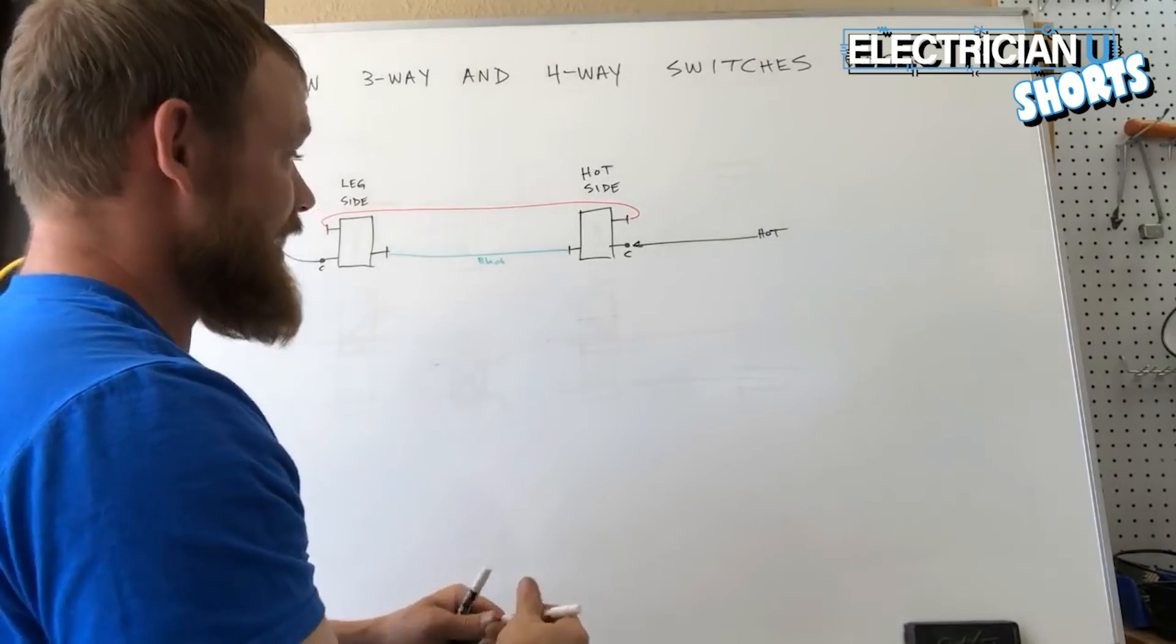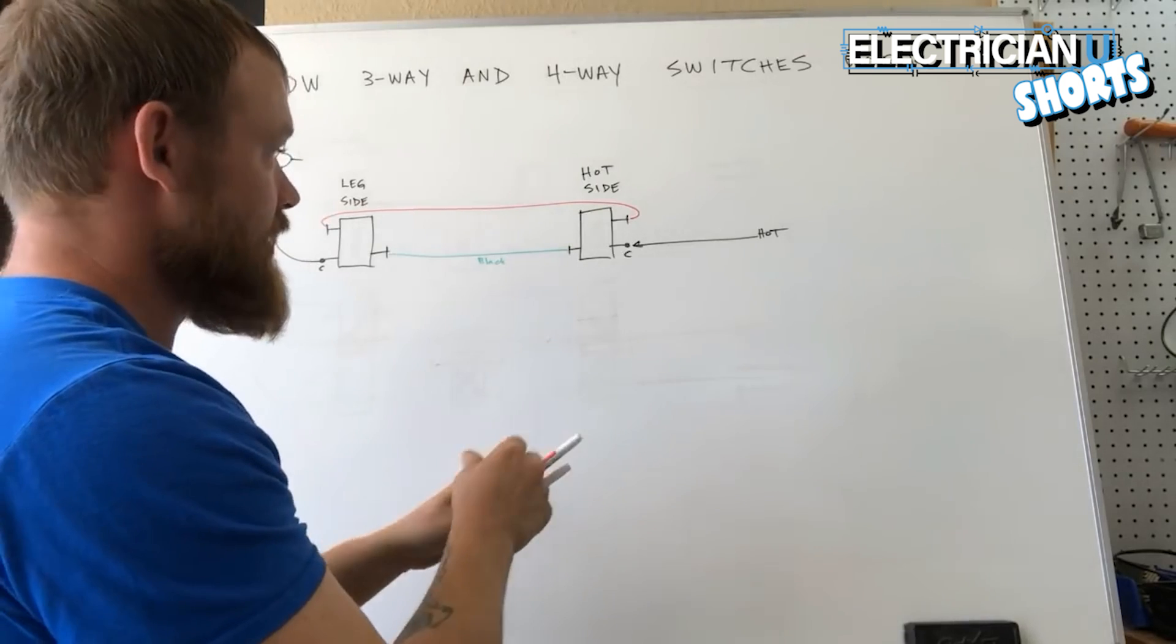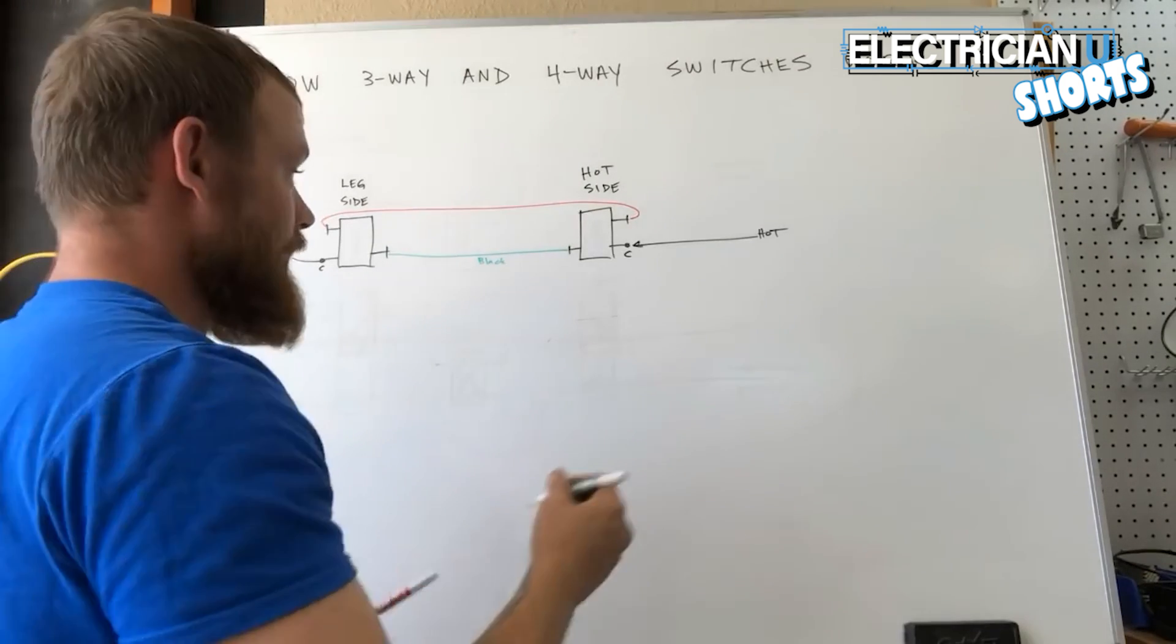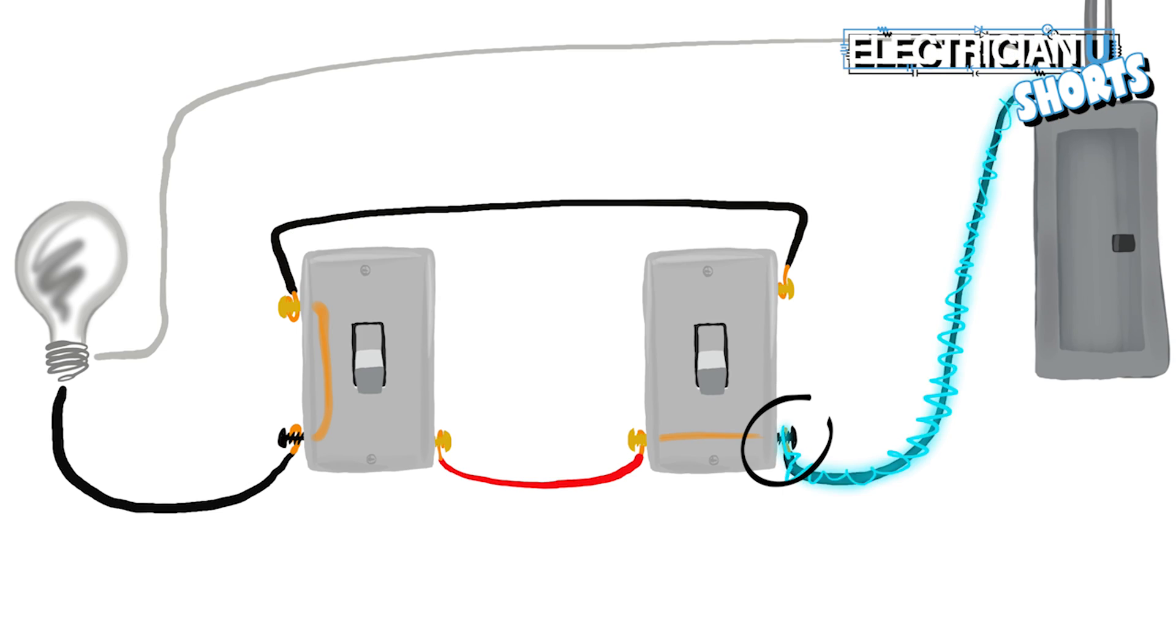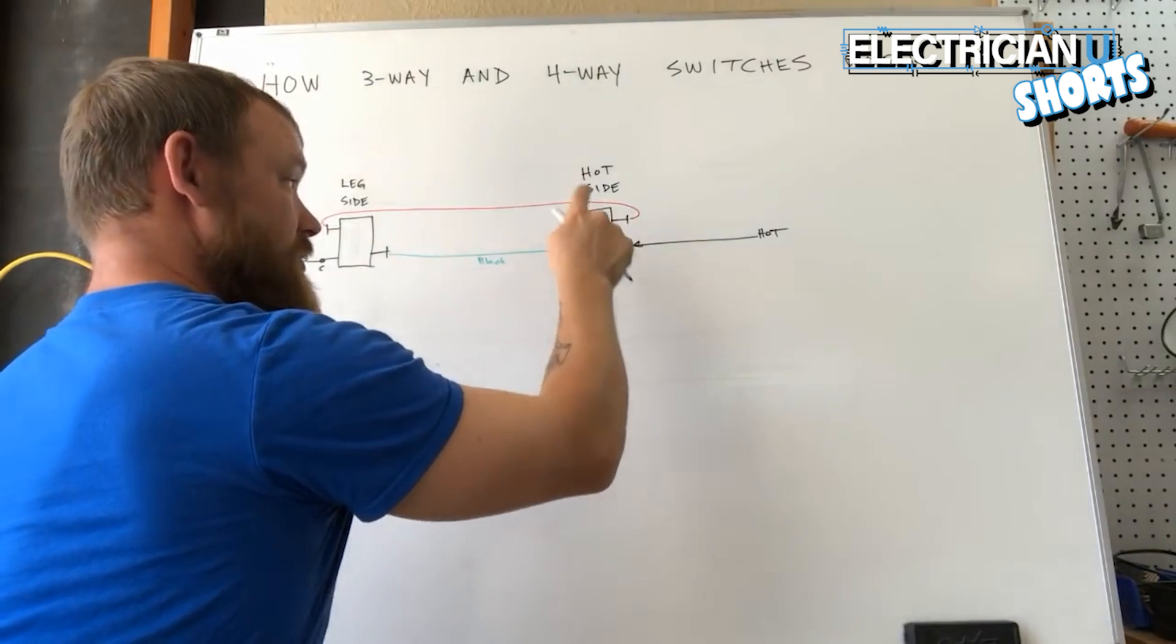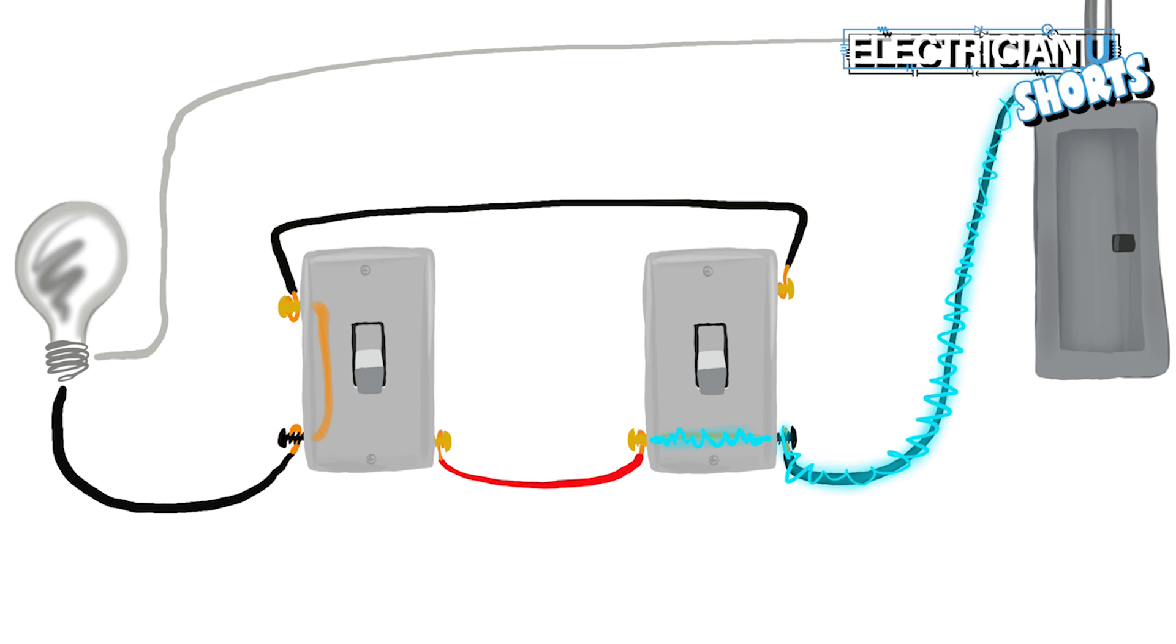So the inside of a three-way switch is going to either connect this common terminal to this terminal or it's going to connect to this terminal. So if you push the switch in one position it connects these two. If you push the switch in another position it connects these two.